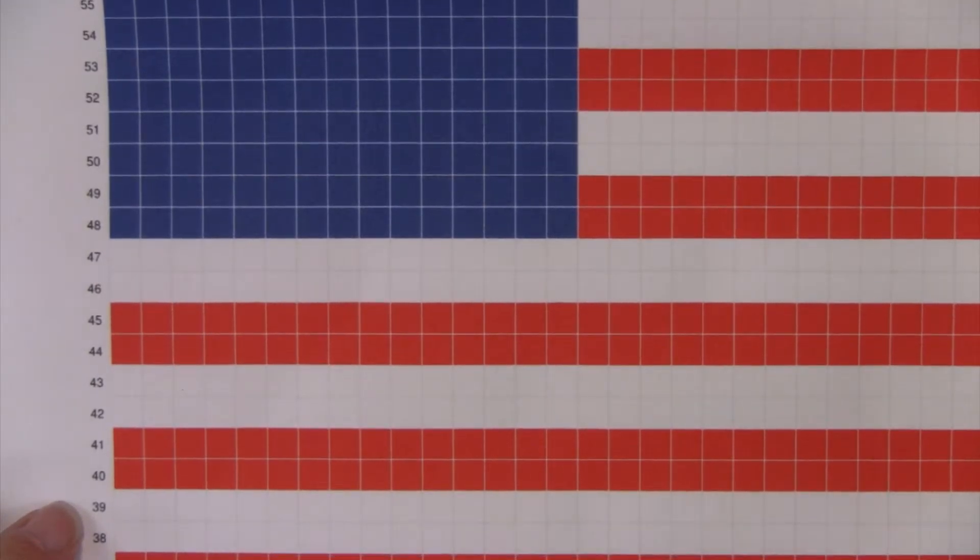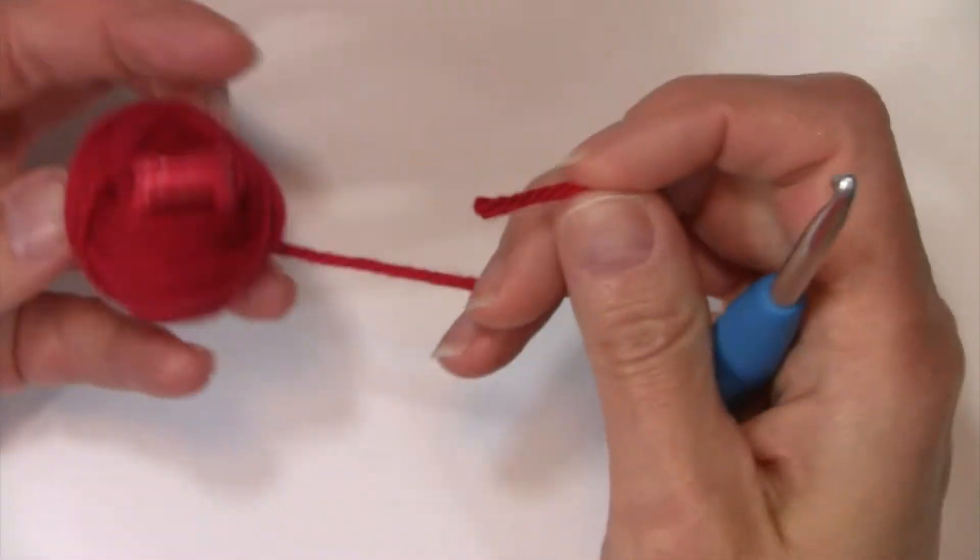So we're going to be using the half double crochet instead of the double crochet and I'm going to show you how we would adapt to that size.